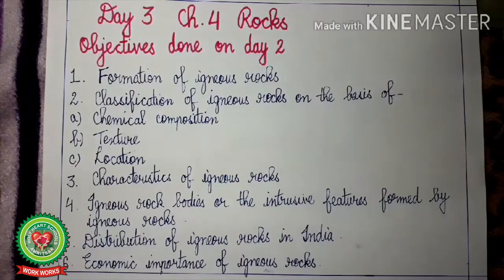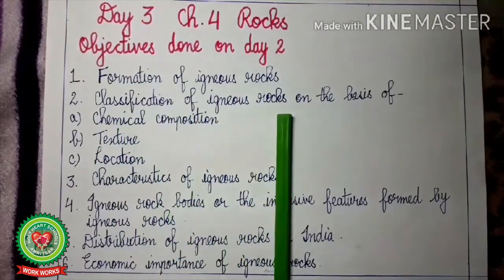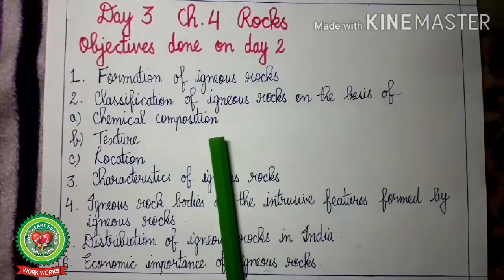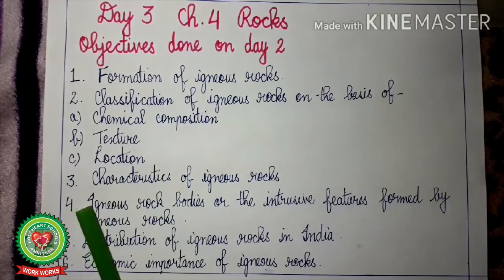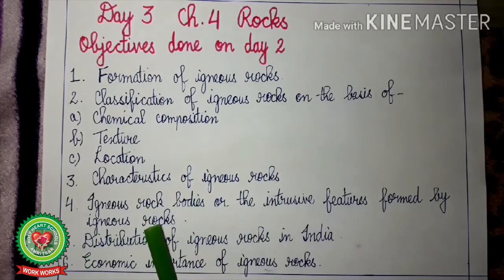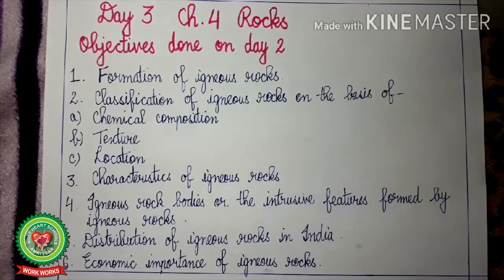In the last class we discussed the following objectives: number 1, formation of igneous rocks; number 2, classification of igneous rocks on the basis of chemical composition, texture, and location; number 3, characteristics of igneous rocks; number 4, igneous rock bodies or intrusive features formed by igneous rocks; number 5, distribution of igneous rocks in India, and finally the economic importance of igneous rocks.